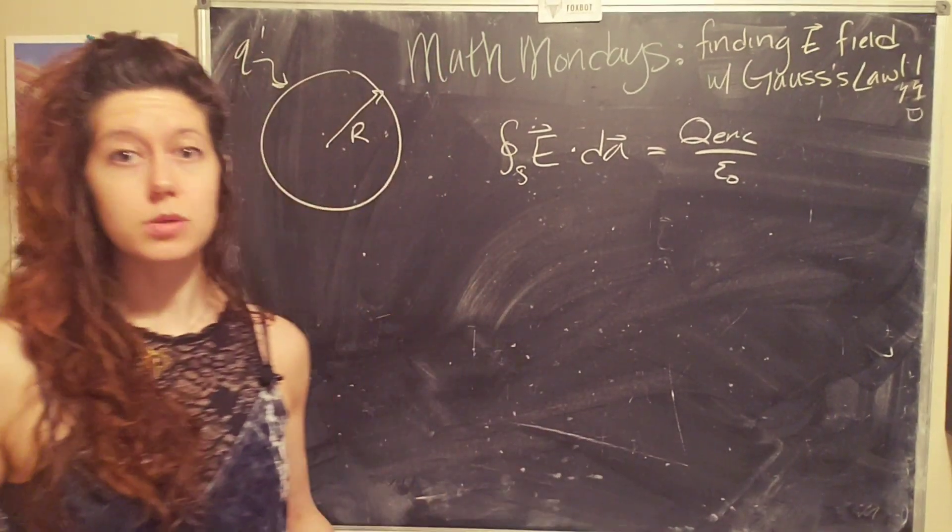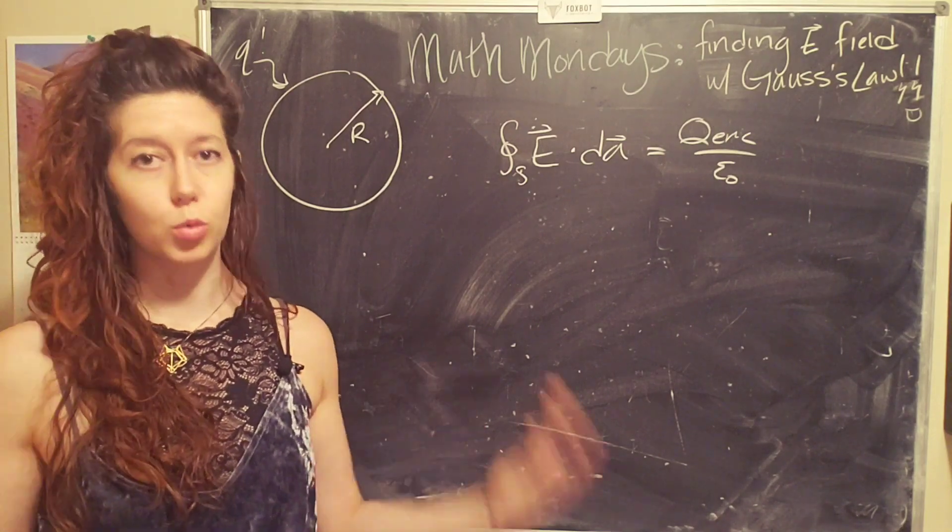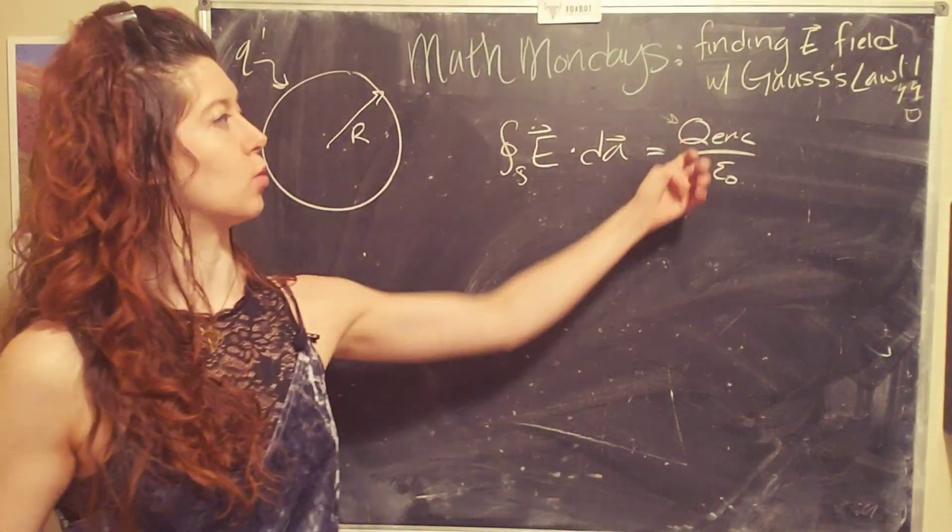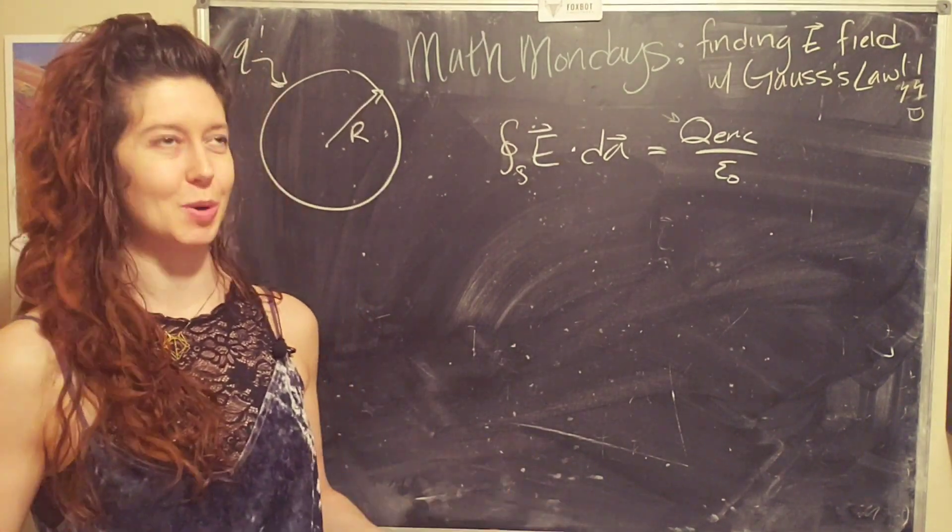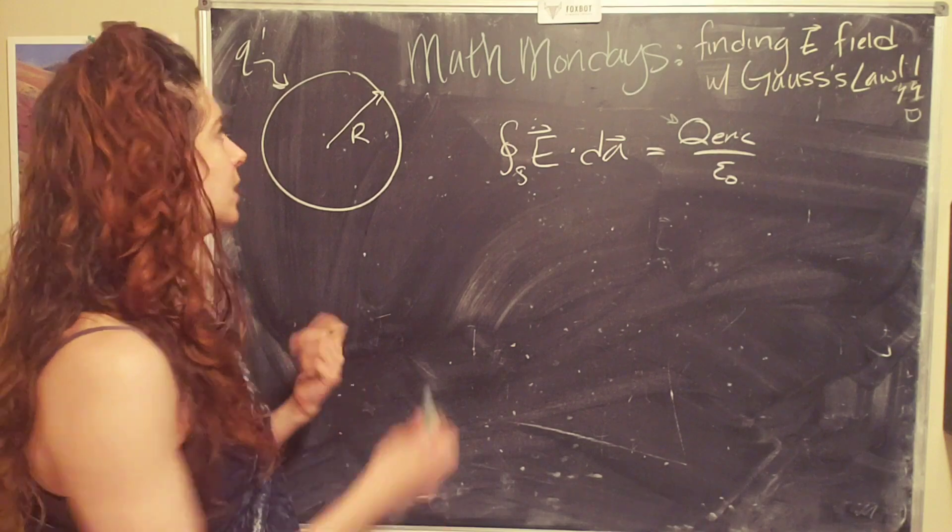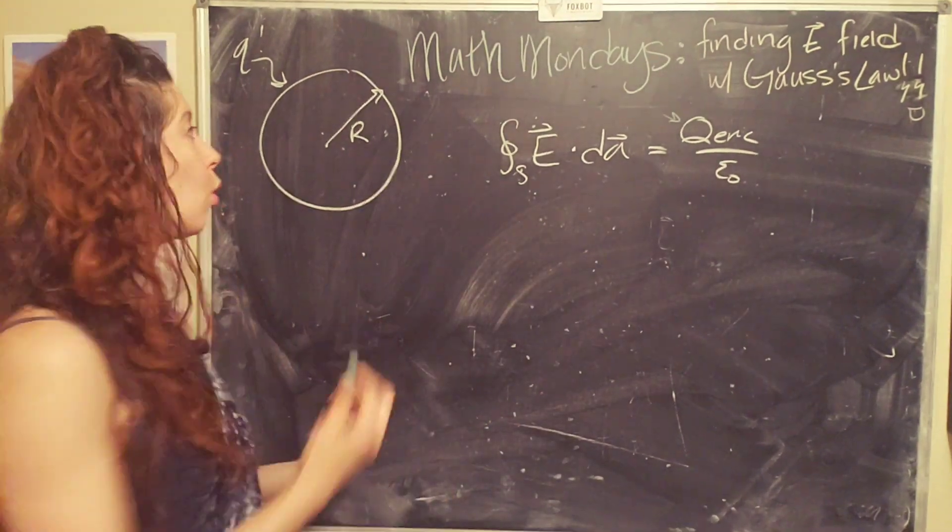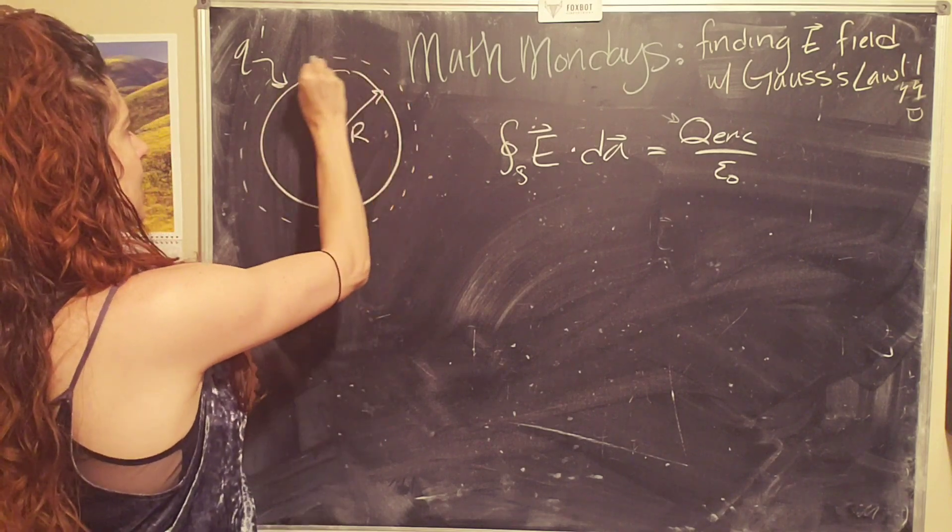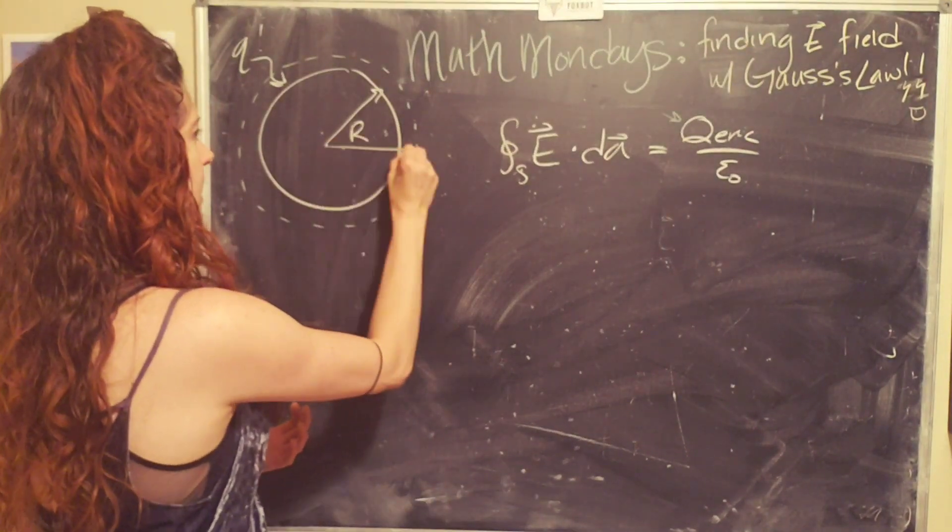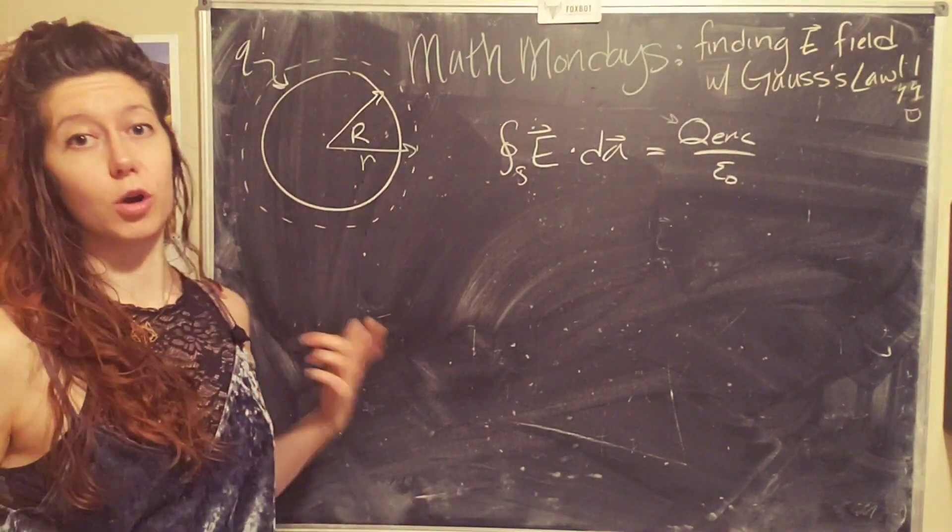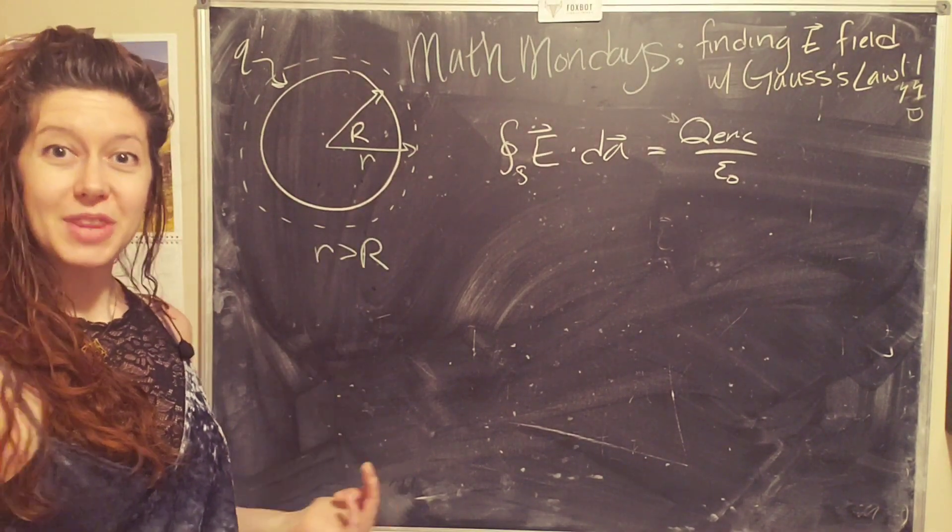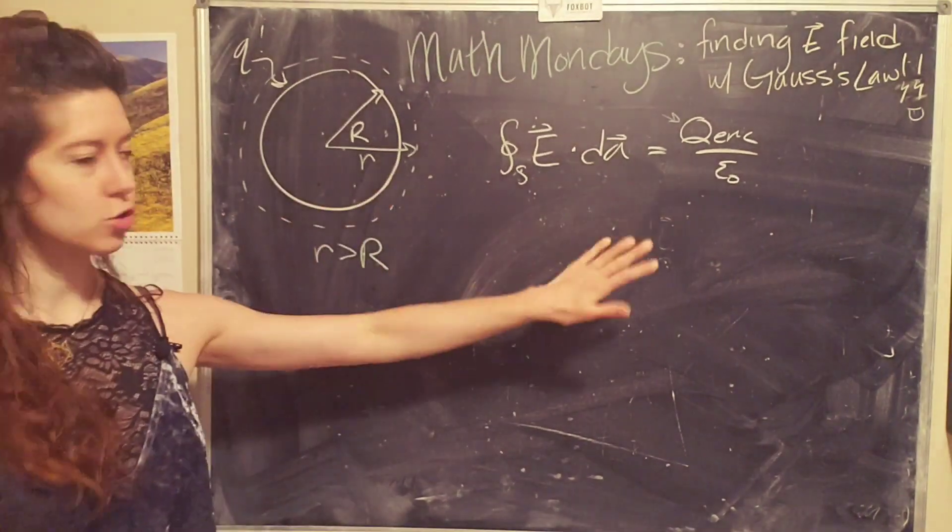So the trick with applying Gauss's law successfully is drawing an appropriate Gaussian surface. So in this case, we basically want to make sure that we enclose all of the charge of interest, as much as possible. In this case, we don't have an infinite surface. And we'll look at how to handle that in the next problem. But for this one, we want to make sure that we are enclosing the whole sphere. So that means that we want to draw a representative Gaussian surface that encloses the sphere. So it's a spherical Gaussian surface.